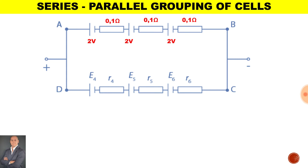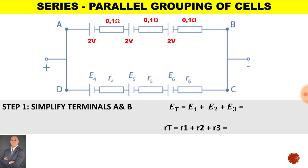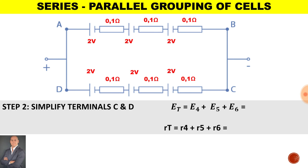Here's an example of a series and parallel grouping of cells. The first step is to simplify terminals A and B. To calculate the total EMF for cells in series it will be 2 plus 2 plus 2. To calculate the total internal resistance it will be 0.1 plus 0.1 plus 0.1. Therefore for terminals A to B, the total EMF is 6 volts and the total internal resistance is 0.3 ohms. For step 2, we calculate the total EMF and total internal resistance for terminals C to D — once again cells in series, so we add the EMF and internal resistance together and get the same answers.